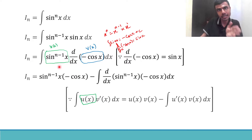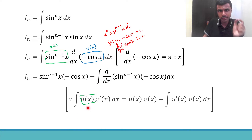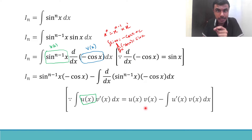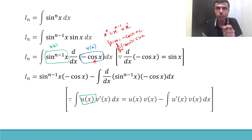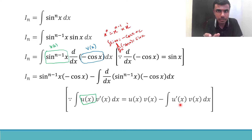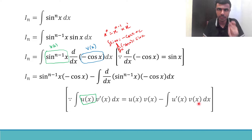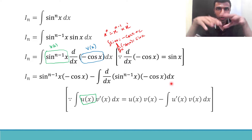So I have my u(x) and my v(x). The integral sin^(n-1) x · (derivative of −cos x) dx matches the IBP form: integral u(x)·v'(x) dx. Therefore, the RHS is u(x)·v(x) = sin^(n-1) x · (−cos x), minus integral of u'(x) · v(x) dx, where u'(x) is the derivative of sin^(n-1) x and v(x) is −cos x.